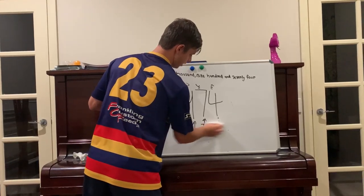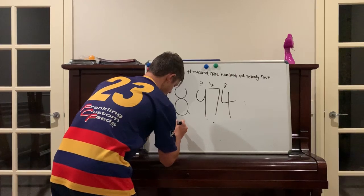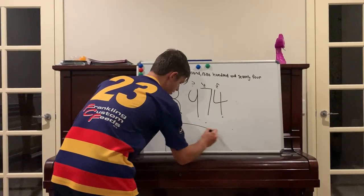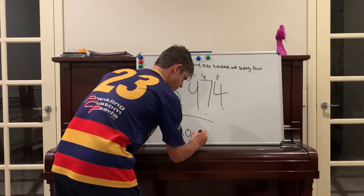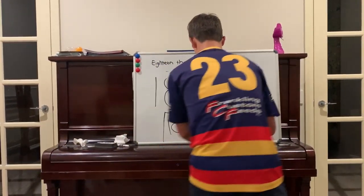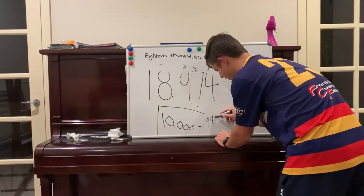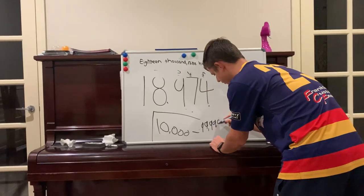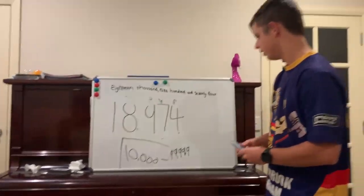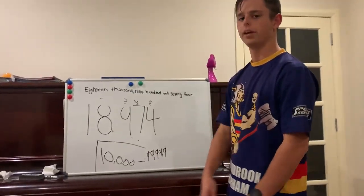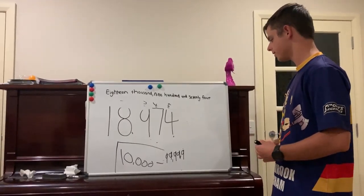The 10s of 1,000s start from 10,000 to 99,999. So any number between these two numbers would be considered a number in the 10s of 1,000s.